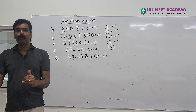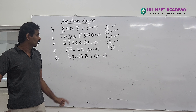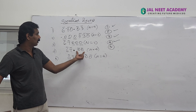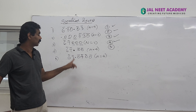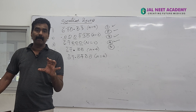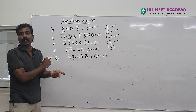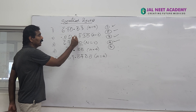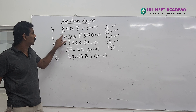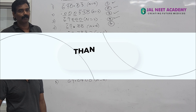Rule 4: in a number with a decimal, the trailing zeros are significant. Rule 5: in a number with a decimal, the zeros before the first non-zero digit are not significant — that is, zeros before the first non-zero digit such as 1 to 5 are not significant. Thank you.